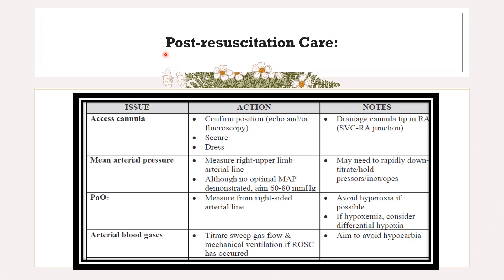After inserting the ECMO, we proceed to post-resuscitation care. First, access cannula care: confirm cannula position, securing, and dressing. Check daily for the position of the cannula tip at the superior vena cava–right atrium junction. Mean arterial pressure can be measured via the right upper limb arterial line; maintain optimal MAP of 60 to 80 mmHg, which can be decreased if ejection fraction is low. Inotropes should be tapered down as soon as possible.